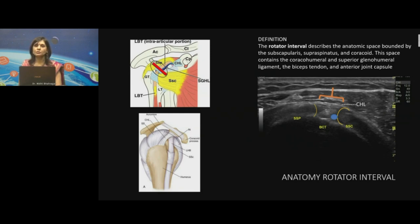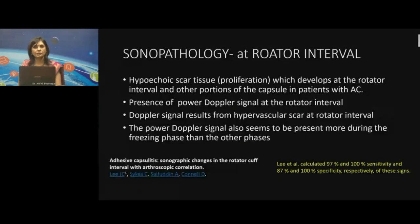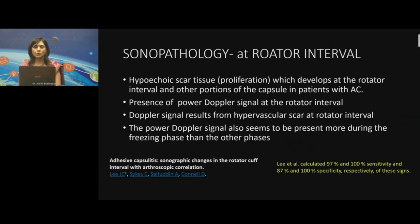The oval region seen in the diagram remains the hallmark where all cases of frozen shoulder or adhesive capsulitis should really be brought to attention. The probe orientation is shown in the red band. There are two things primarily to see at the rotator interval: the coracohumeral ligament, which forms the roof, and the second change which comes with adhesive capsulitis — post-inflammation there is a hypoechoic proliferation or synovial proliferation which goes on to become scar tissue later, developing at the level of the rotator interval or other capsular regions.